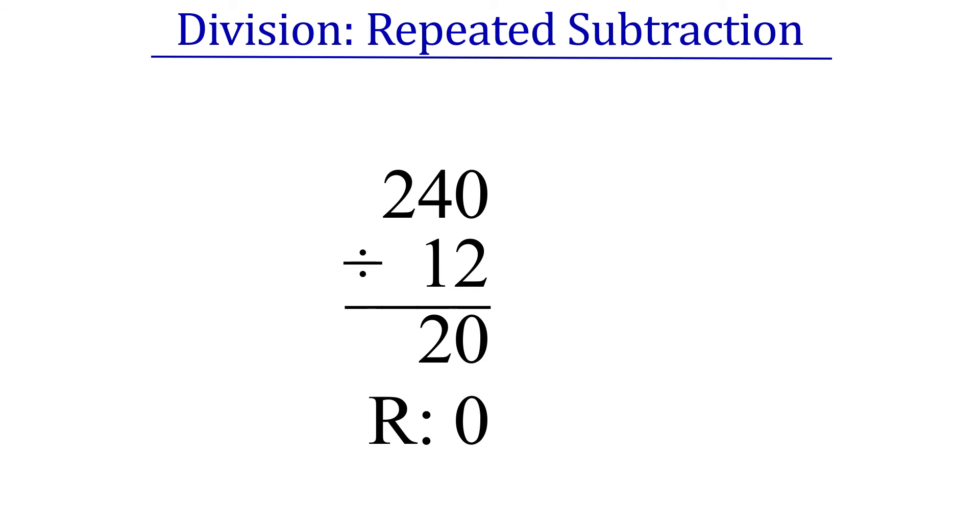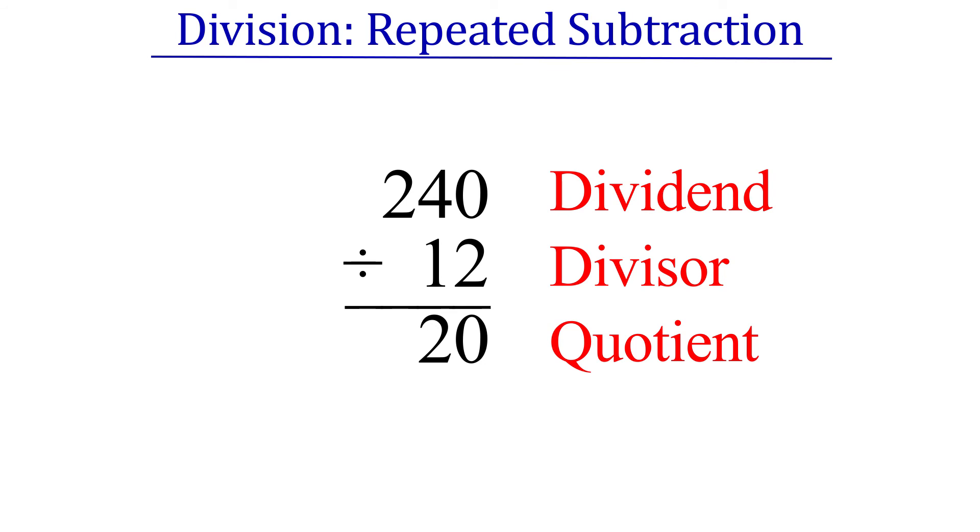Well, four if you count the remainder, which we won't for now. The three parts are the dividend, which is the number to be divided up, the divisor, the number doing the dividing, and the quotient, which is the answer.